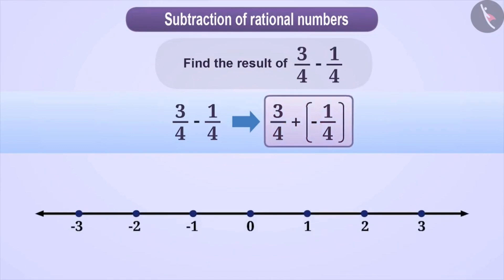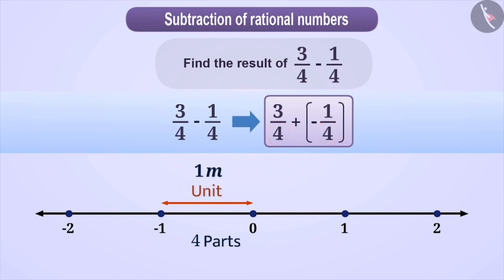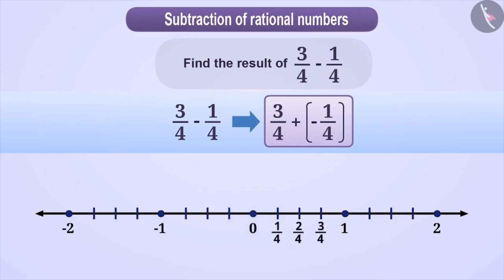We can solve this using the number line as well. For this, first we draw a line and mark integers on it. Each unit shows a distance of 1 meter. Both rational numbers have denominator 4, so each unit should be divided into 4 equal parts. We divide each unit of the number line into 4 equal parts and name them as 1/4, 2/4, 3/4 to the right of 0, and on the left minus 1/4, minus 2/4, minus 3/4.